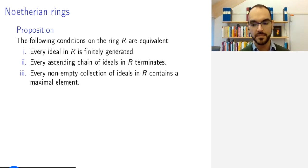And finally, the third condition says that every non-empty collection of ideals contains a maximal element. Maximal here doesn't mean maximal ideal. It means an element that is maximal in this collection. So if you have such a collection, ideals J_I indexed by some index set I, if this contains at least one ideal, so it's not empty,